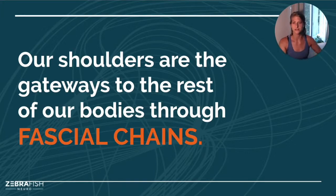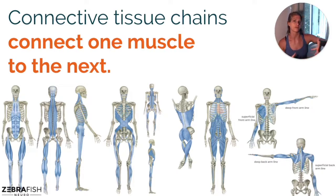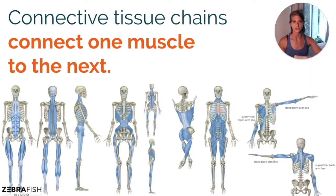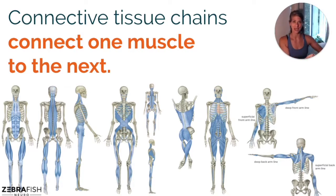So what are fascial chains? Fascial chains are sometimes referred to as muscle chains or muscle sling systems. Some of you may have heard the term 'posterior chain' before — that refers to all the muscles in the back of the body: your spinal muscles, glutes, hamstrings, calves. Basically, connective tissue chains connect one muscle to the next muscle and to the next. I think of it like sausage links where you have your muscle and the connective tissue or casing of the muscle narrows down and connects to the next muscle and so on.